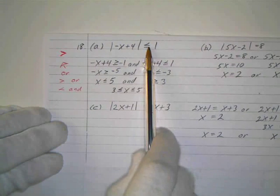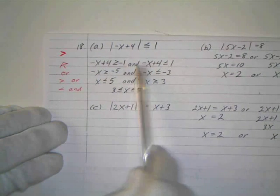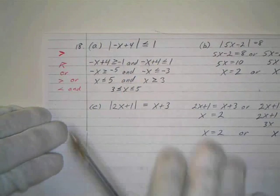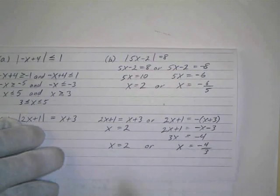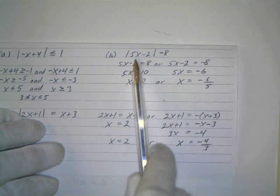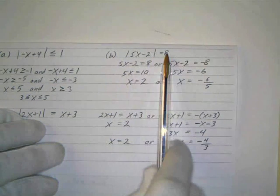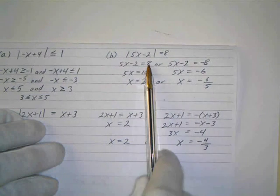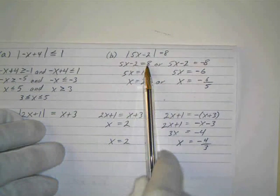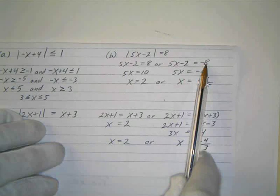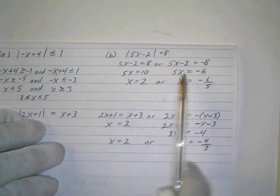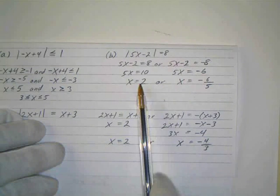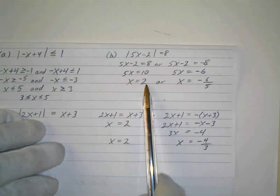So this is the trick, how to break this up into these two simple inequalities. So this becomes an and, write it exactly as is, and then just reverse and negate. Okay, letter B is a little bit easier. This is just an absolute value equality. So if the absolute value of the number equals 8, that means the number could either be 8 or it could be negative 8, because the absolute value of either of these is 8. So I just say 5X minus 2 equals 8 or 5X minus 2 equals negative 8, and then solve both these simple little equations.